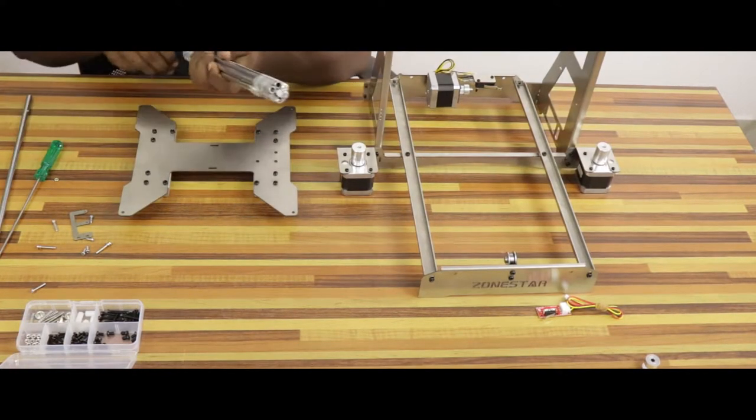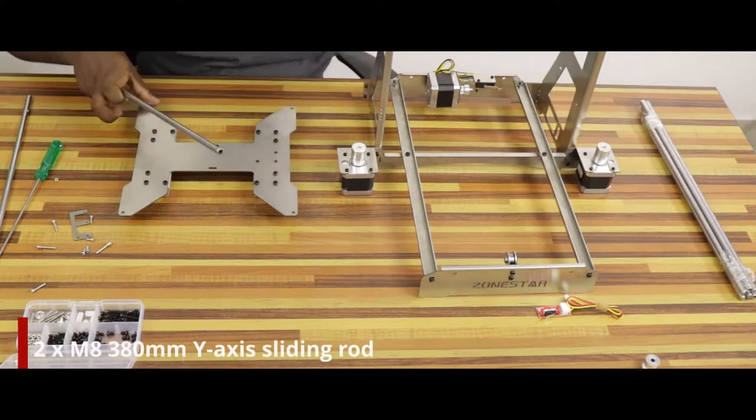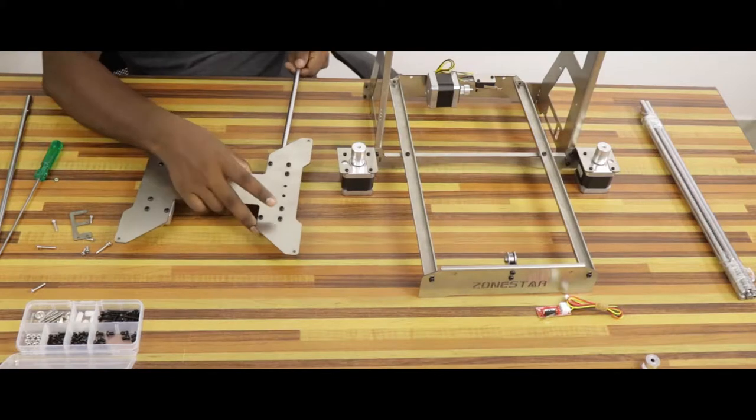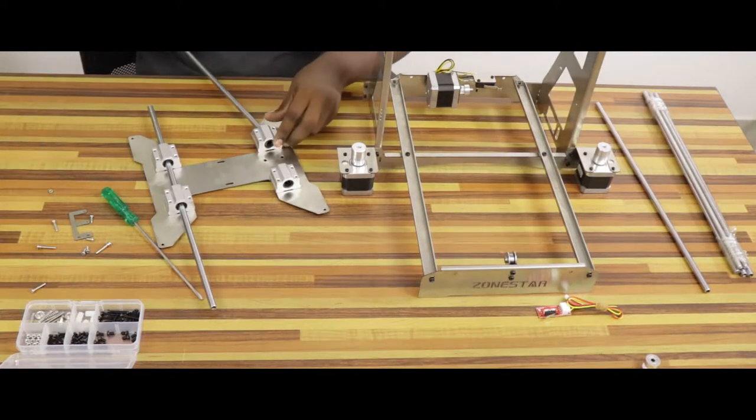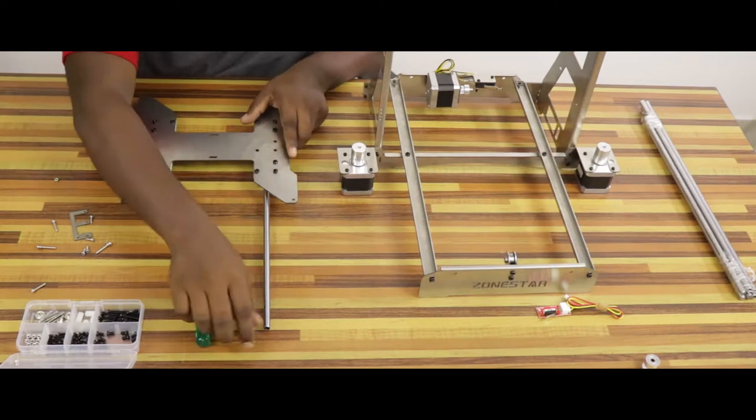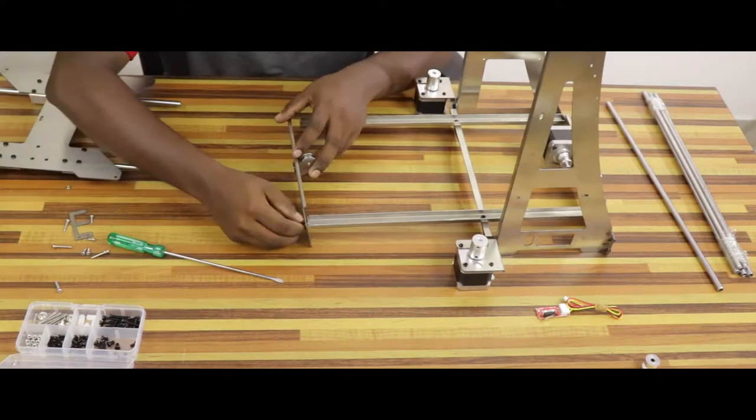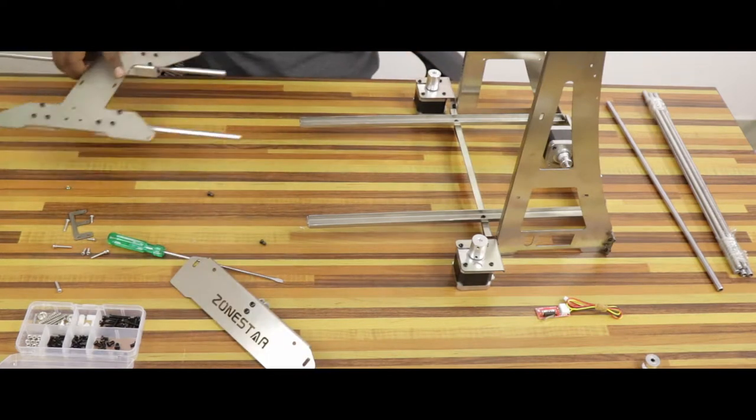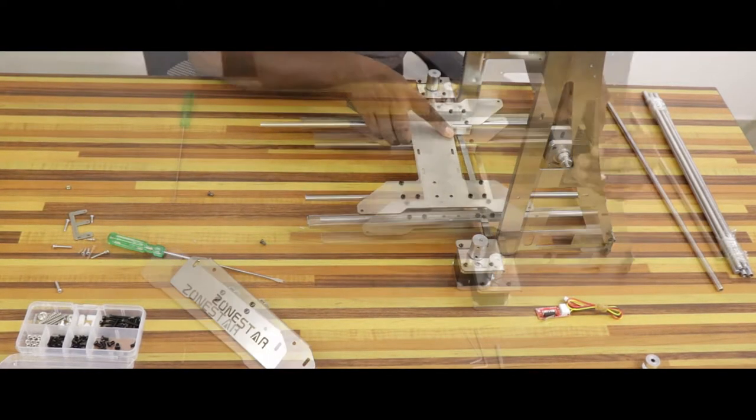Next, install the two M8 380mm Y-axis sliding rod through the linear bearings in the heat bed bracket and attach this setup between the front and rear base frames. You have to use the rods with holes on top and bottom. You may have to attach the front base frame at last. I mistakenly connected it already. So, let's remove it and reattach it after installing the heat bed bracket.